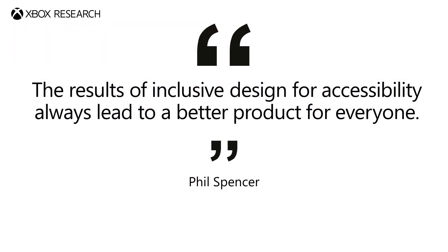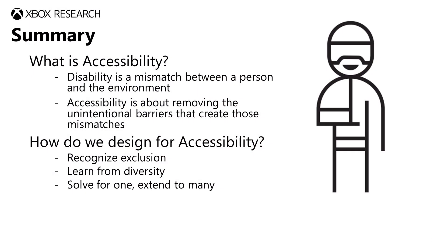As Phil Spencer has said in the past, the results of inclusive design for accessibility always lead to a better product for everyone. It's important for us to include people with disabilities from the very beginning of the planning process so that this can be a proactive part of your design approach. The inclusive design approach also reinforces the role of people without disabilities as strong allies and partners who share the role towards inclusivity and accessibility. In sum, accessible design is about removing the unintentional mismatches between people and the environment that we have created through our designs. Inclusive design means intentionally recognizing when exclusion is happening, learning from the diversity of people's experiences and solutions, and knowing that by solving for one use case, we can benefit many more.